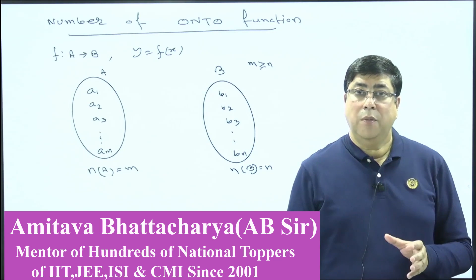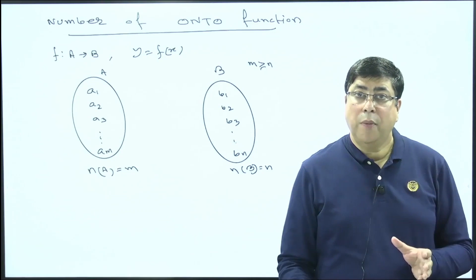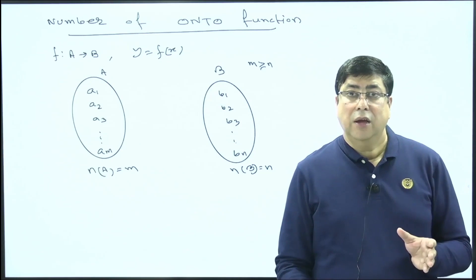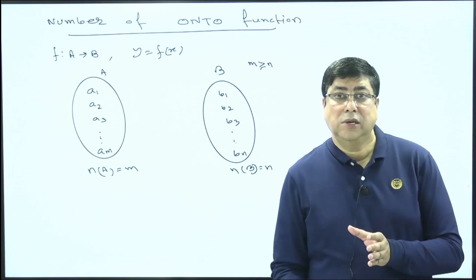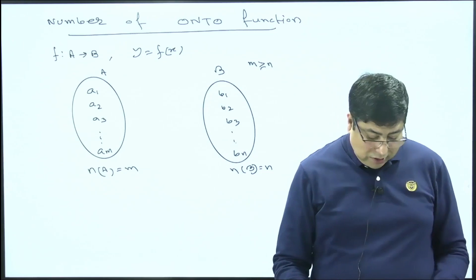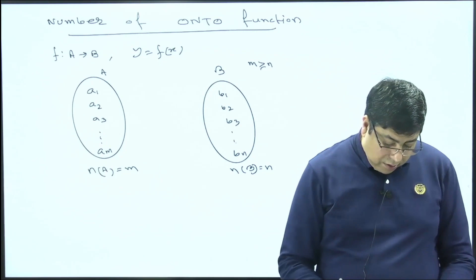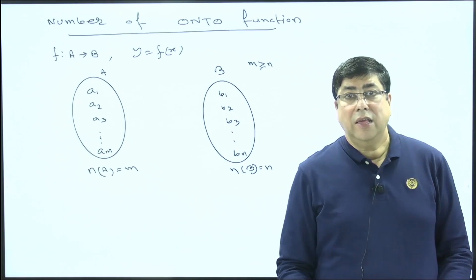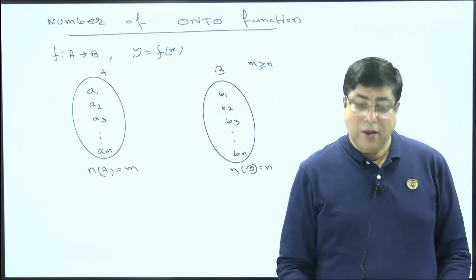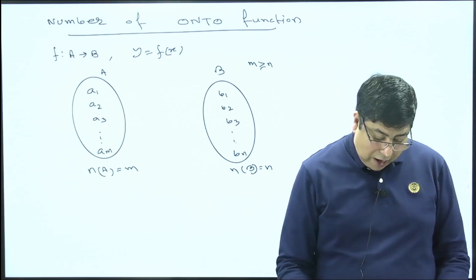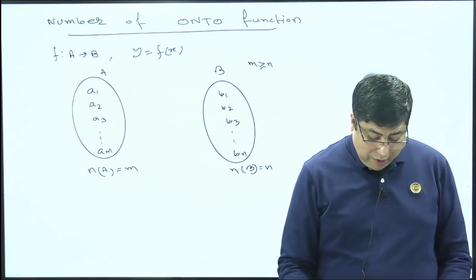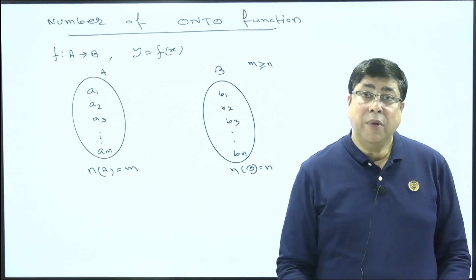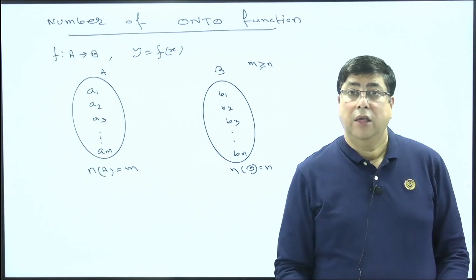Here we discuss the total number of onto mappings from one discrete set A to another discrete set B. Suppose y = f(x) is a function, set A is the domain set containing m elements, and set B is the codomain set containing n elements, where m ≥ n.